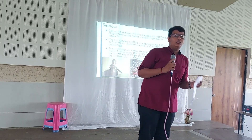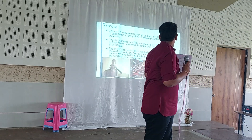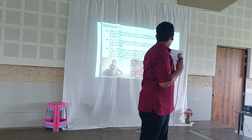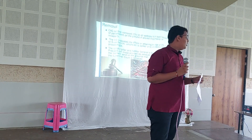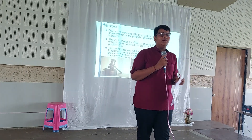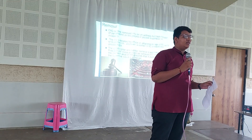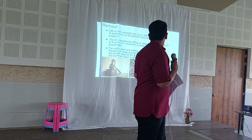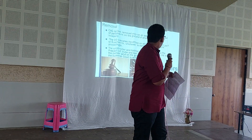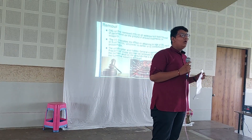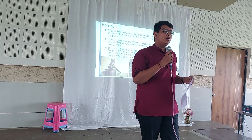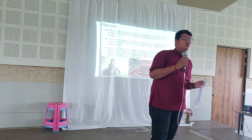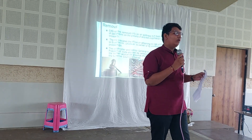Removal. The removal of CAG can be done by three ways: when both houses of parliament pass a majority vote regarding proved misbehaviour or incapacity of the CAG; when the CAG has attained the age of 65 years; or after the term period of 6 years. The CAG can also be removed by the same procedure by which a Supreme Court judge is removed.